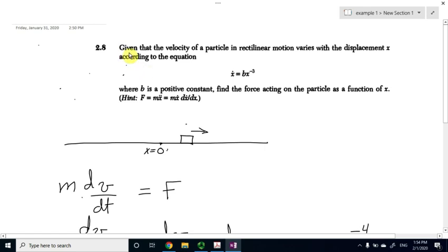The problem states: given that the velocity of a particle in rectilinear motion, which means in one dimension, varies with the displacement x according to the equation.